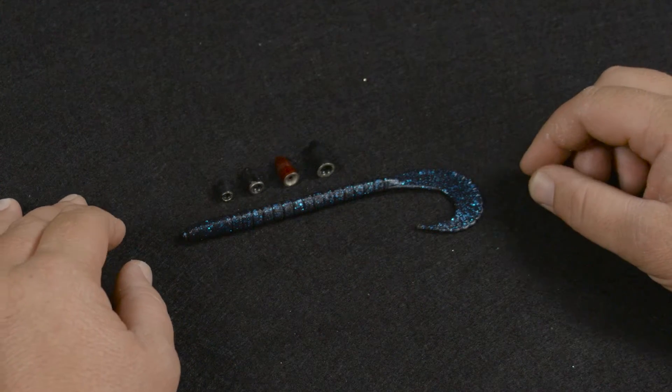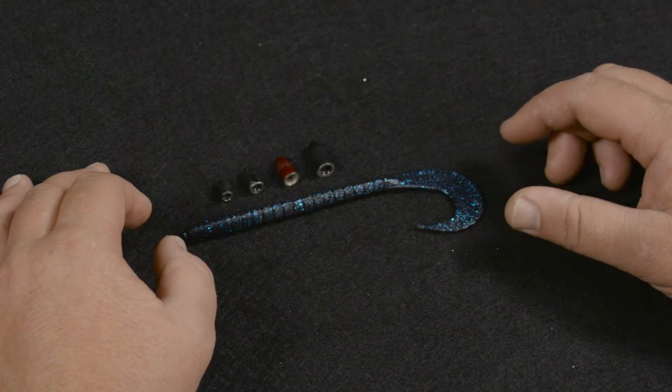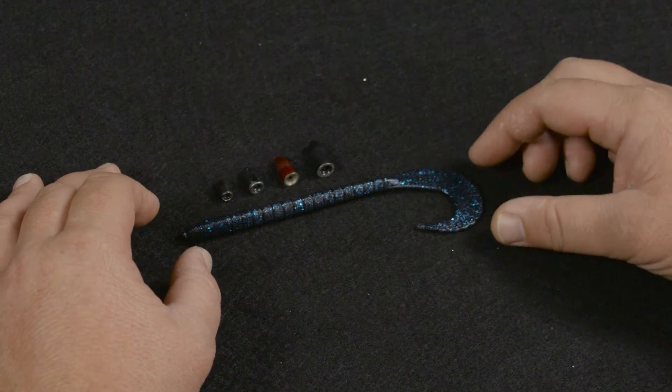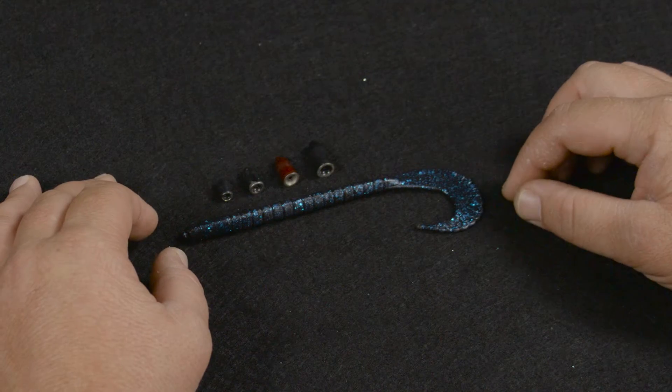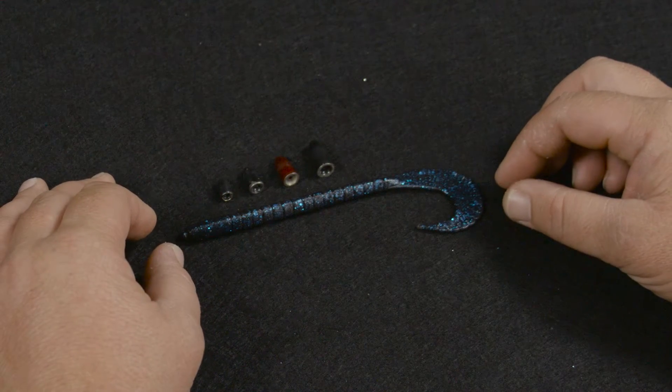I don't have any green pumpkin here, but I use painted weights. I like the green pumpkin to match my green pumpkin or green worms, and then the black and the red for all the different worms out there.